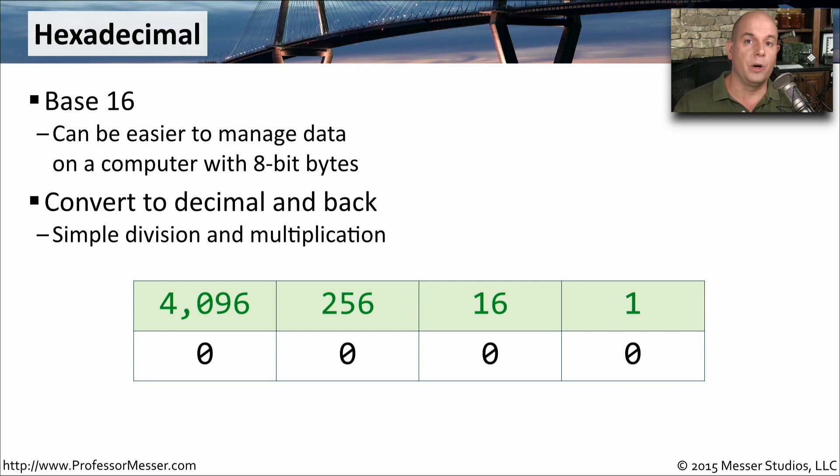Let's create a conversion chart that we're going to use to perform these hexadecimal calculations. We'll have four different places. Starting on the far right, we'll put a one, then multiply one by 16 to get 16, multiply 16 by 16 to get 256, and 256 times 16 is 4096.